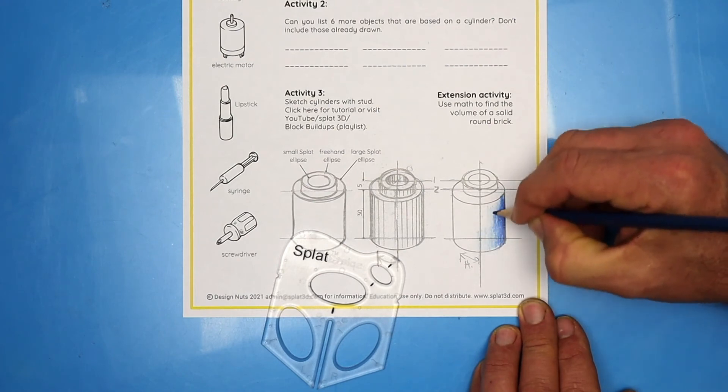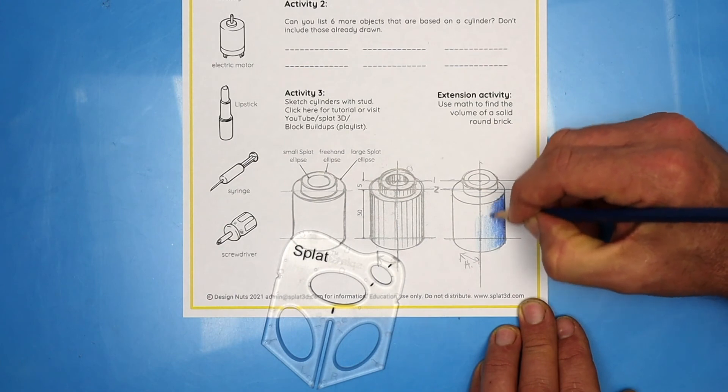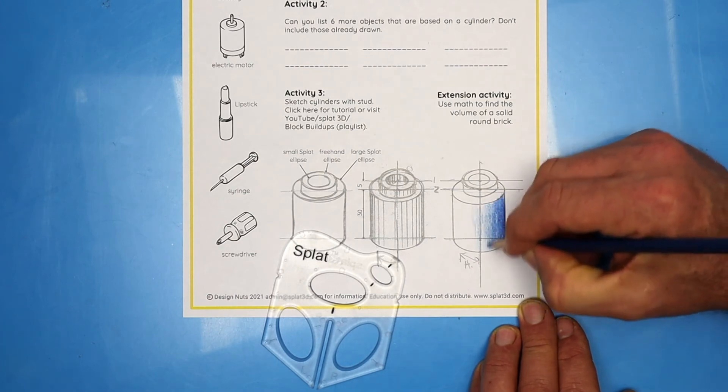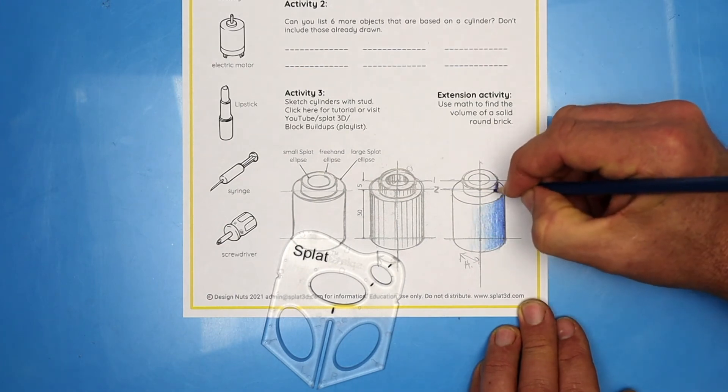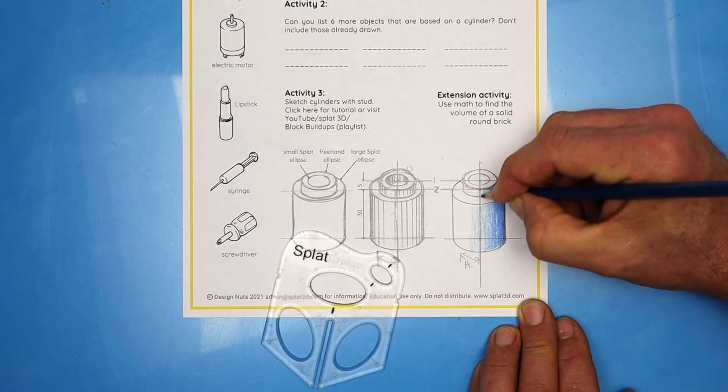I'm using several runs along the cylinder there. It takes a bit of practice to make it look even. Now on the top, that's my long fade. Let's go over to the other side.